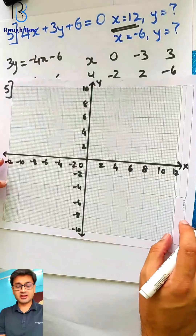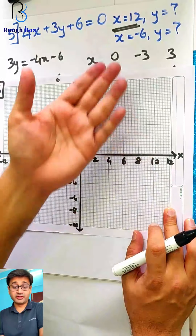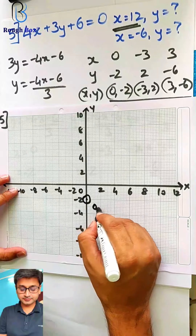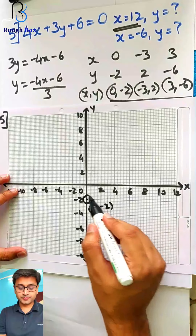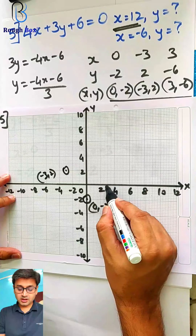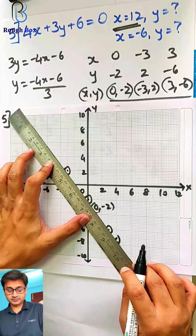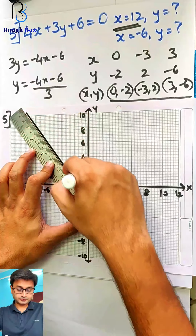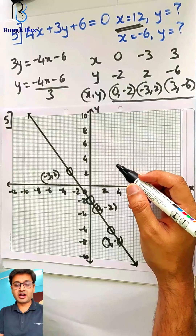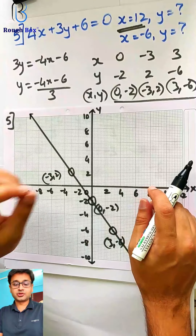Let's plot them on the graph sheet. This time I've taken the graph sheet as horizontal because x is up to 12. First point (0, minus 2) is right here. Second point (minus 3, 2) is here. Third point (3, minus 6) is here. Let's draw the line. I'm sure the first part — x equals 12 — is not going to fit, and I purposely picked up this sum so that you don't panic if I put it in the homework section.